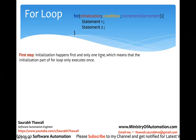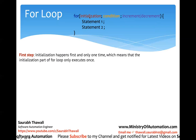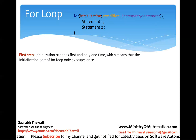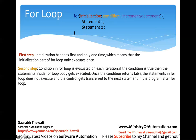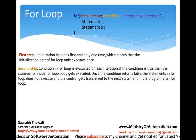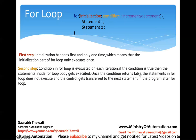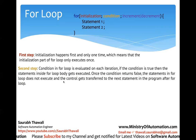The first step is initialization, which happens only one time. The initialization part of the for loop executes only once — you initialize the counter only once and then the rest starts executing. The second step is the condition, which is evaluated on each iteration. If the condition is true, the statements inside the for loop body get executed. Once the condition returns false, the statements in the for loop body do not execute and the control does not enter inside the loop.